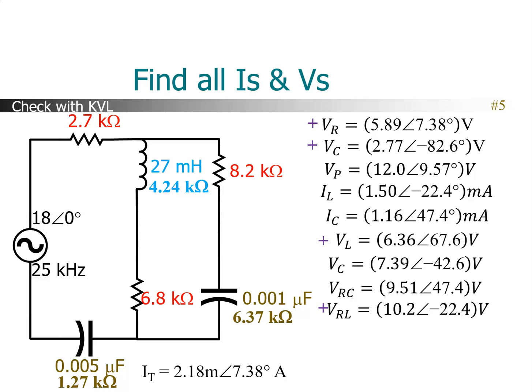And that is all of the values that we need. One quick double check you can do is go around a loop and add up all the voltage drops to see if it adds up to zero. So if you go around the inner loop here with the inductor and the 6.8K resistor, all those voltages I've indicated with a plus sign — if you add up those four voltages, you should get the source voltage of 18 ∠0. I did that and got something very close to it, with perhaps a little bit of rounding error, but close enough that I feel pretty comfortable the numbers are correct. You can do the same thing around the outer loop. So that's how to analyze a series parallel RLC circuit.